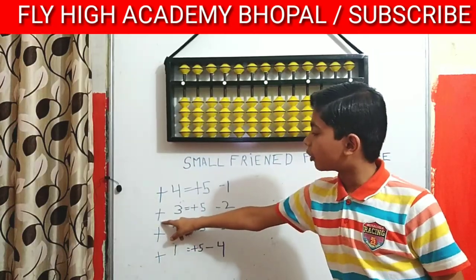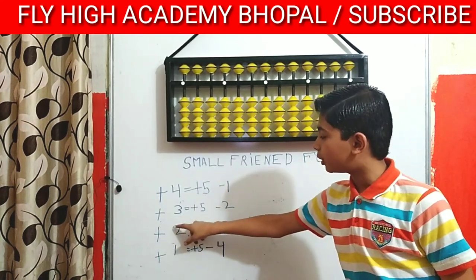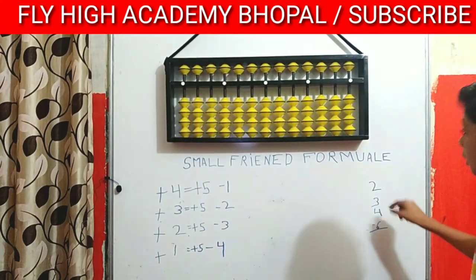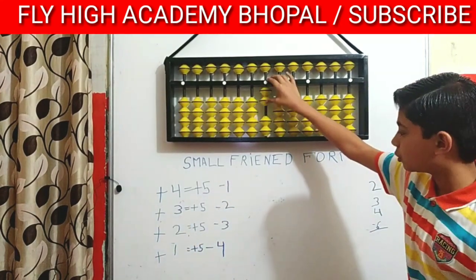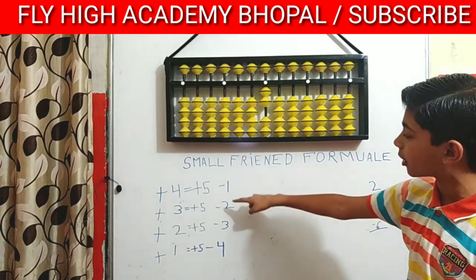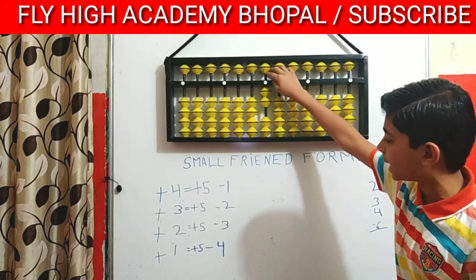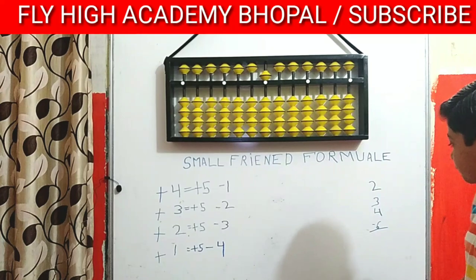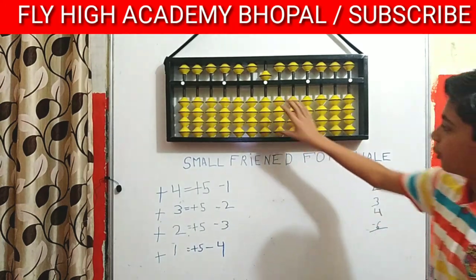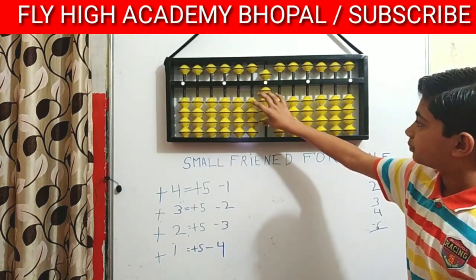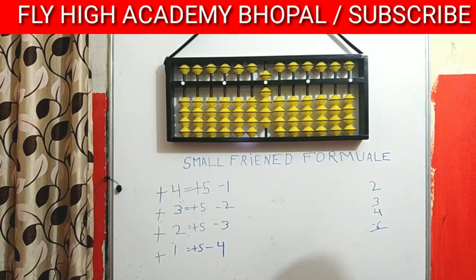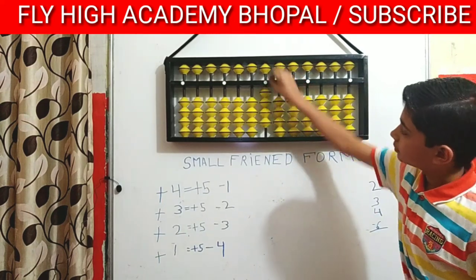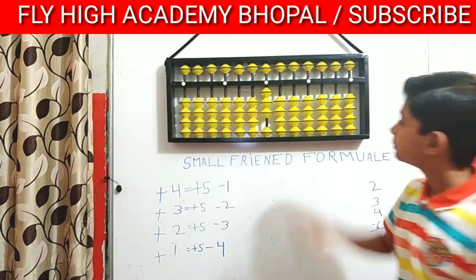The second formula is plus 3 equals plus 5 minus 2. Plus 2 and now plus 3 equals plus 5 and minus 2. And now plus 4 and minus 6. So the answer is 3.